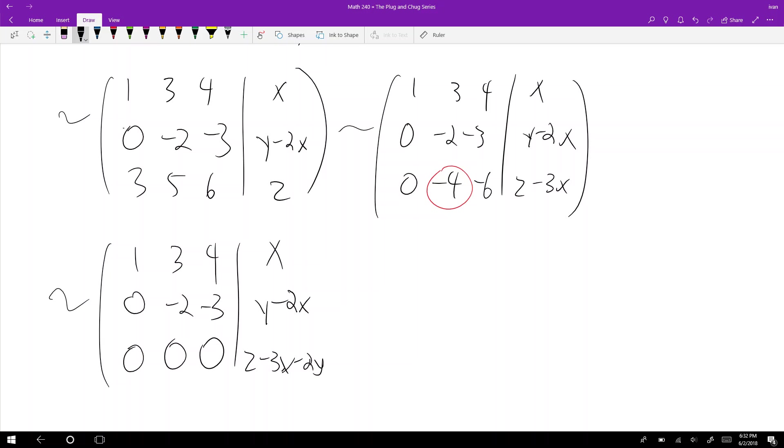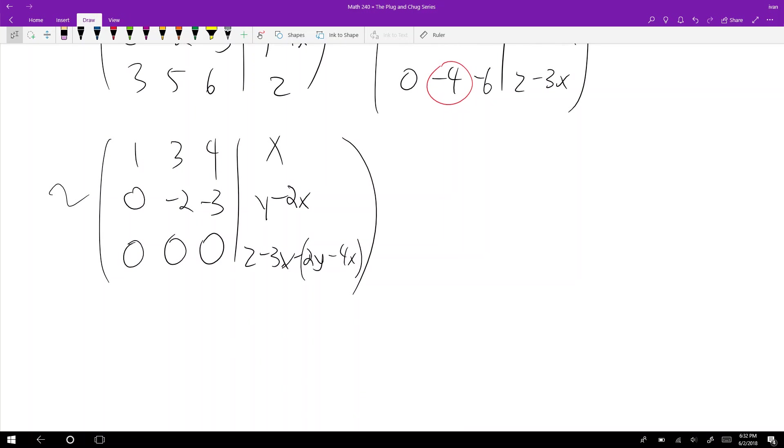This simplifies to z minus 2y plus x, because minus a negative 4x means adding 4x back. You'll notice there's no pivot in the third column. What does that mean? It means that if this term equals zero, then there exists an a, b, and c such that the linear combination equals our x, y, z term.